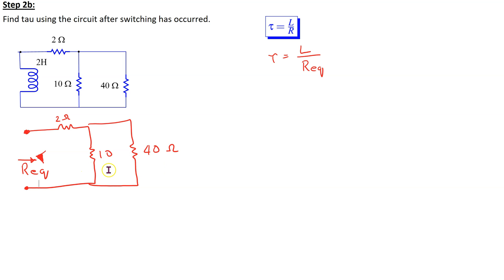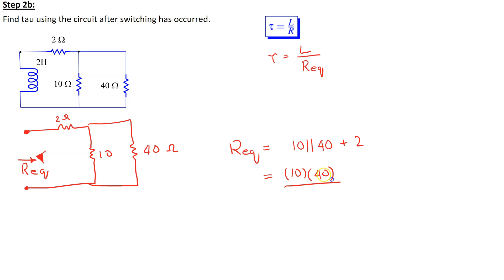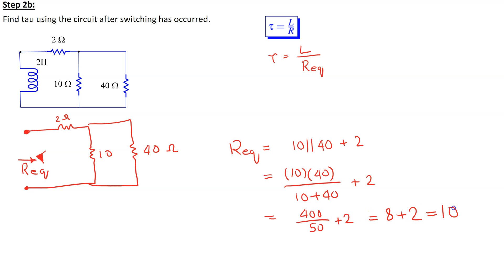This equivalent resistance can be found using series-parallel combination of the resistors. We start at the far end and start collapsing the circuit back towards the input. The 10 ohm and the 40 ohm resistors are in parallel, and then this equivalent resistance is in series with the 2 ohm resistor. Thus, R equivalent is given by (10 parallel 40) plus 2, which equals (10 times 40) divided by (10 plus 40), giving 400 over 50 plus 2, which is 8 plus 2 equals 10 ohm. Thus, the time constant tau is given by L over R equivalent, equal to 2 divided by 10, which is 0.2 seconds.